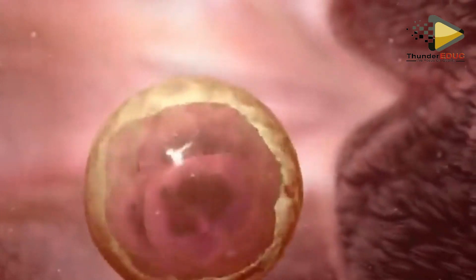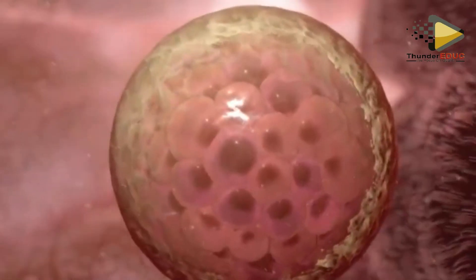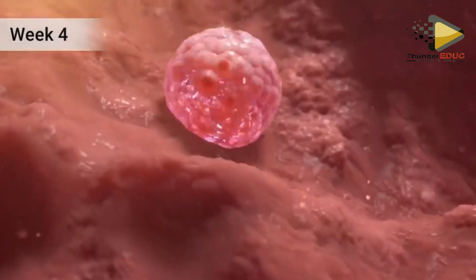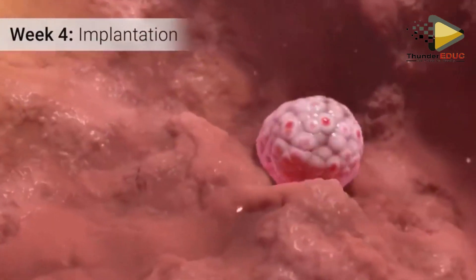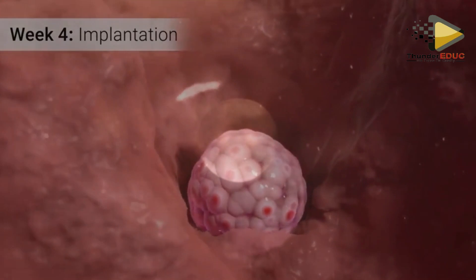It becomes a zygote which divides by mitosis to form a ball of cells called morula, and then later forms a blastula.